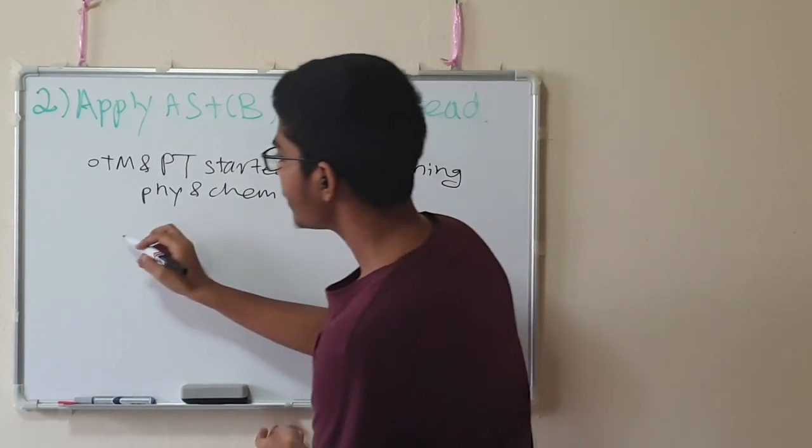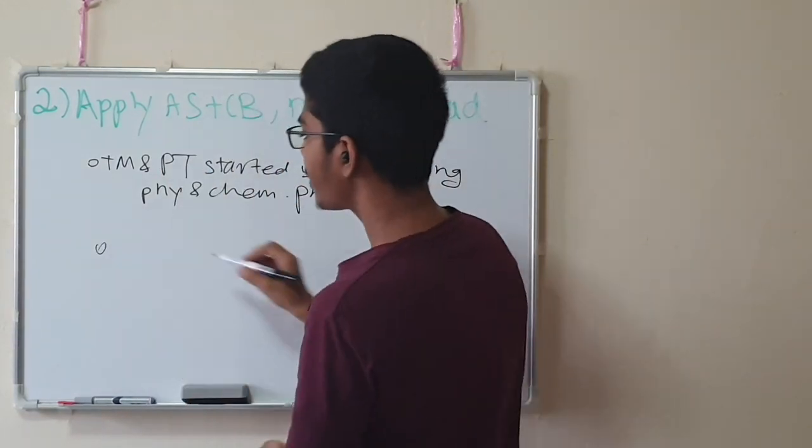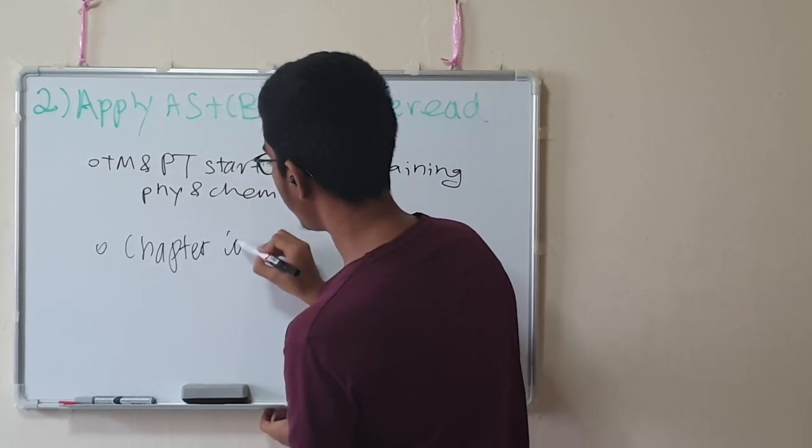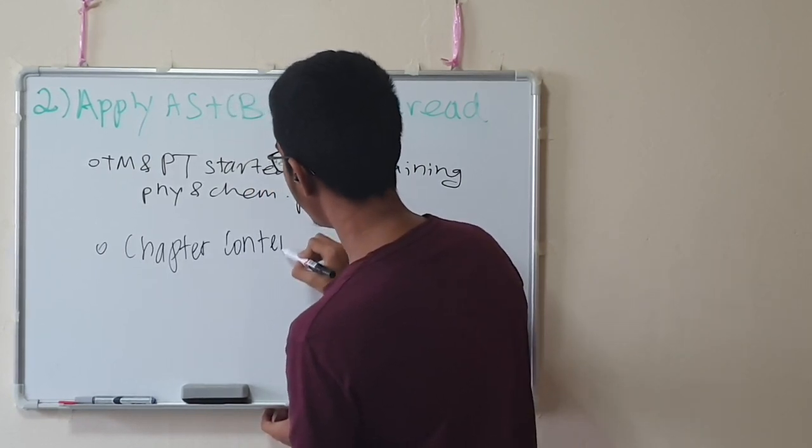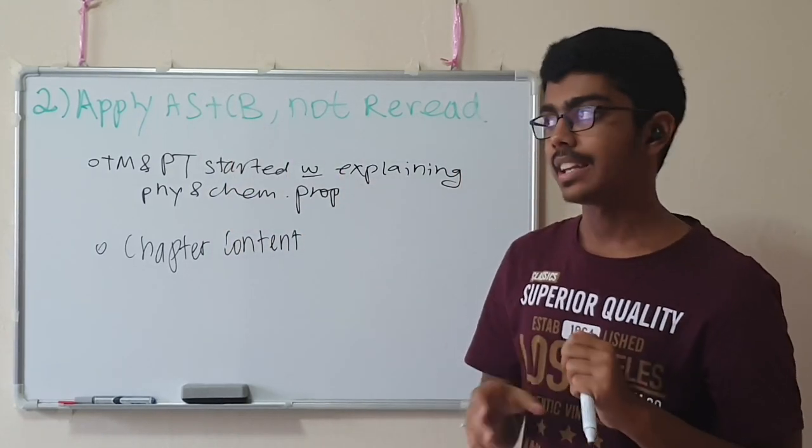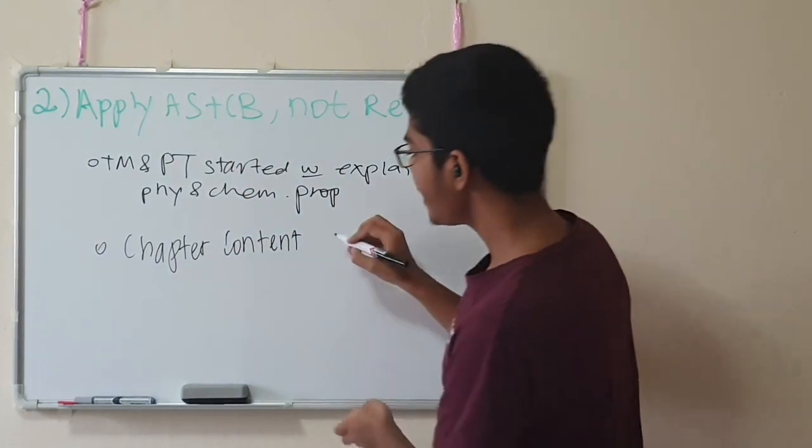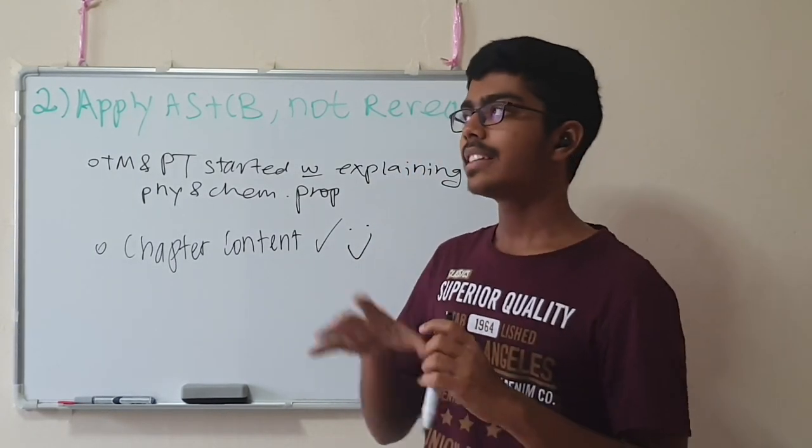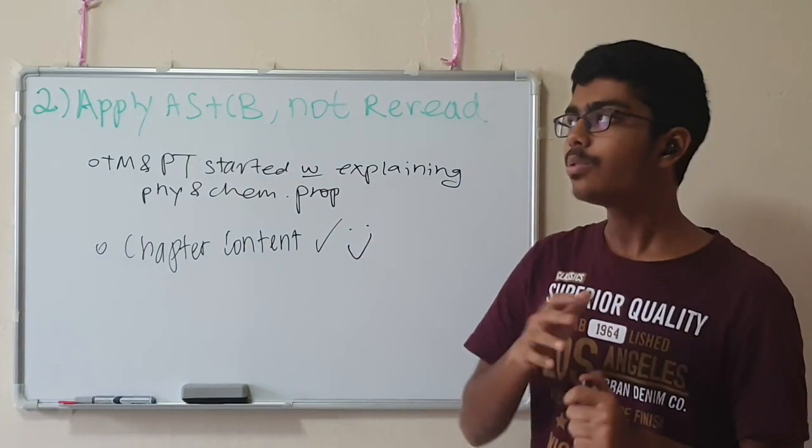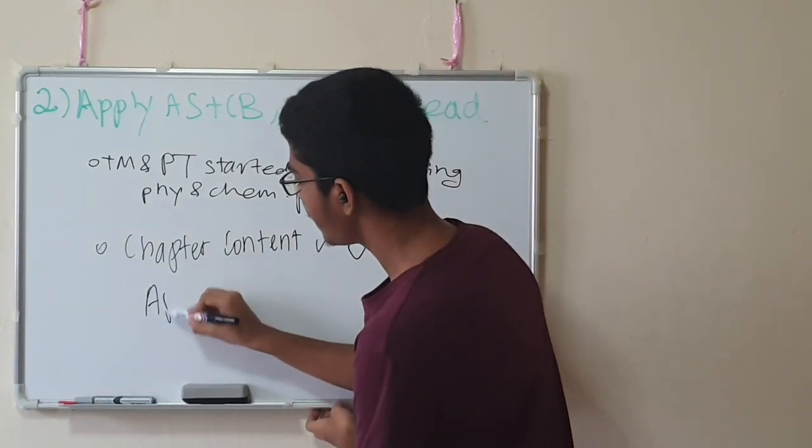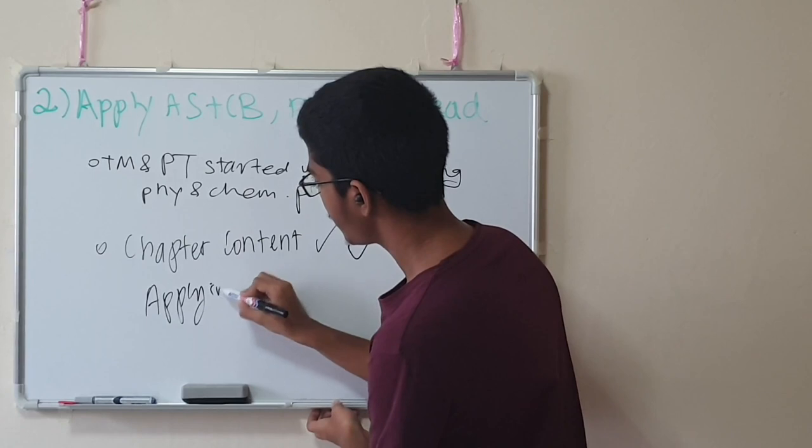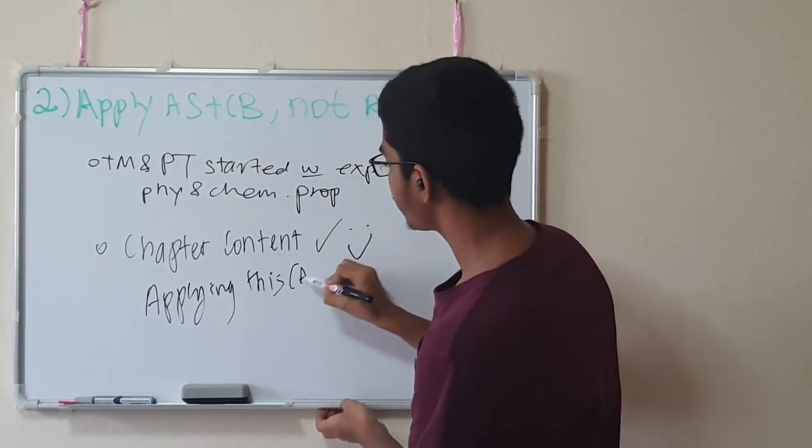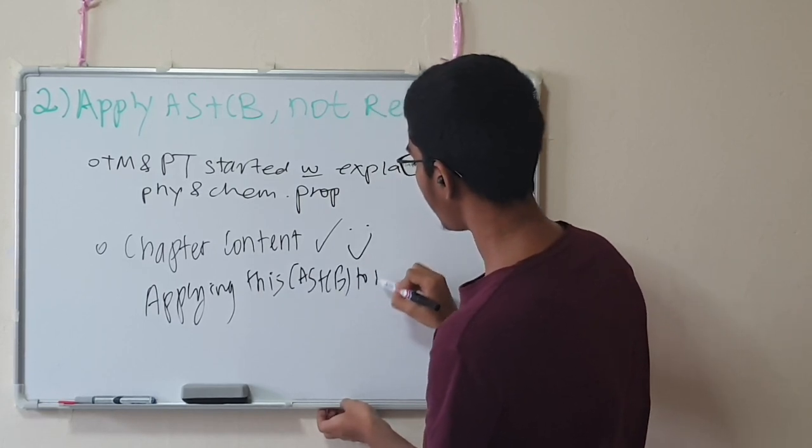Instead, what you guys should do, the thing that you guys are good at, if your atomic structure and chemical bonding is good, that means that the chapter content in atomic structure and chemical bonding, like the bond length, the bond strength, these are the things that you guys are good at. But the problem that differentiates the high and the low grades is applying this, applying atomic structure and chemical bonding to new topics.